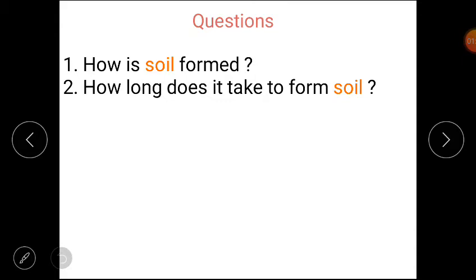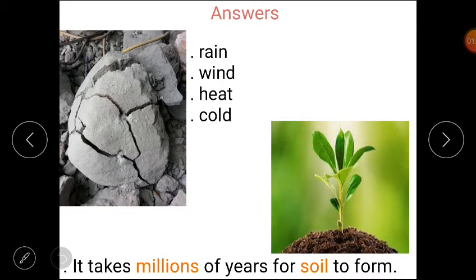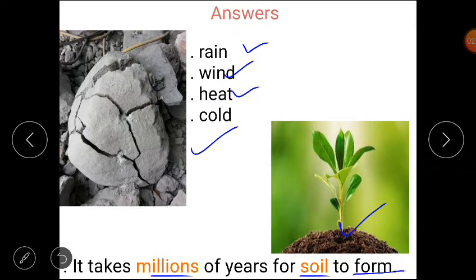Now students, here are some questions. Question number one is, how is soil formed? And how long does it take to form soil? The rock breaks due to rain, wind, heat or cold and forms small particles. These small particles form soil. Plants start growing on these particles. And second answer is, it takes millions of years for soil to form. I hope answers are clear to you all.